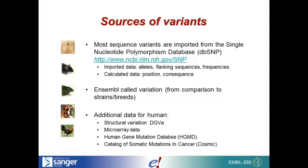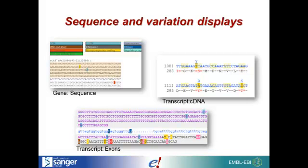We do have some additional sources — for human, we have structural variation from DGVA, microarray data, human gene mutation database variations, and COSMIC. You can view variations on the sequence in several different views, including the gene tab sequence view, the transcript tab cDNA view where amino acids are highlighted in red if there's another possible amino acid at that position, and the transcript exon view.